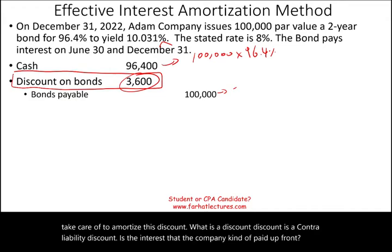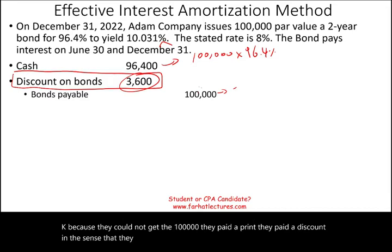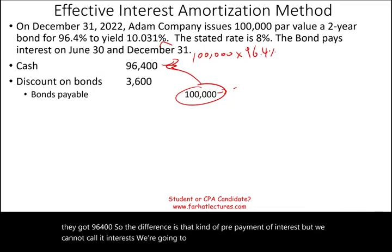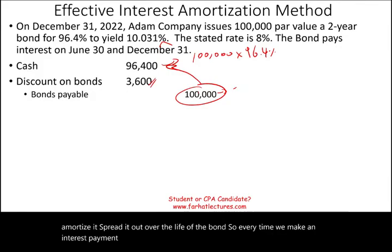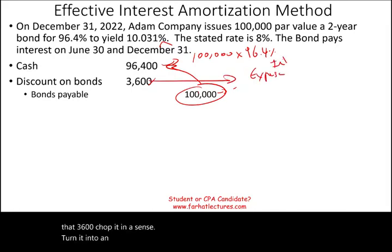What is a discount? Discount is a contra liability. Discount is the interest that the company kind of paid up front, because they could not get the full $100,000 — they received only $96,400. So the difference is a kind of prepayment of interest. We're going to call it discount and amortize it — spread it out over the life of the bond. Every time we make an interest payment, we're going to convert some of that $3,600 into interest expense.